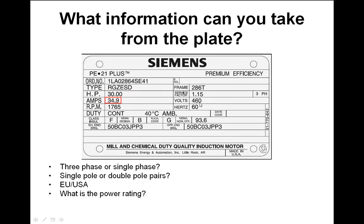Three-phase is confirmed by the voltage reading. Single or double pole pairs can be worked out from the RPM. If running at 60 Hz, synchronous frequency should be 3600 RPM. This motor shows 1765 RPM — should be 1800 for a double pole pair asynchronous motor, but it's slipping behind synchronous speed as expected. So it's confirmed as a double pole pair asynchronous motor made for the USA.